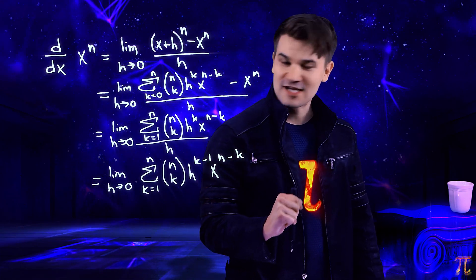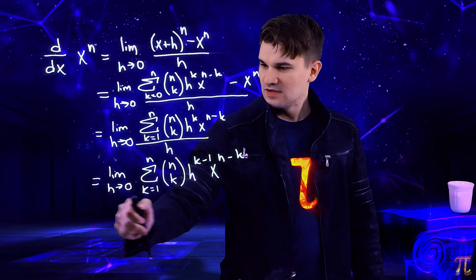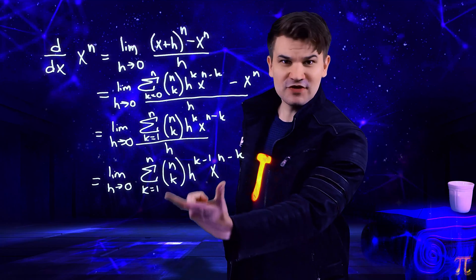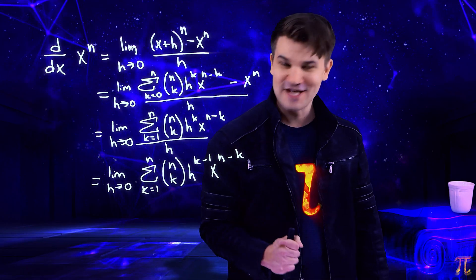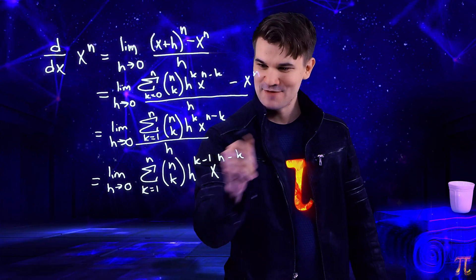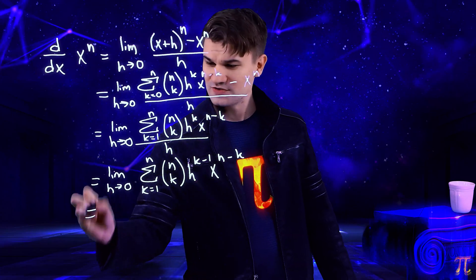Now we can take this limit. h is approaching zero, so every term here is going to vanish unless its exponent on h is zero. That's when k minus one equals zero, so k equals one. We only have the k equals one term left after we take the limit.